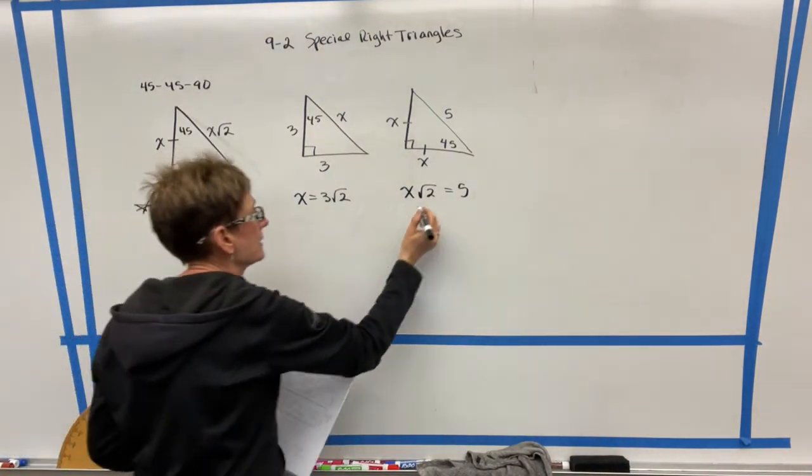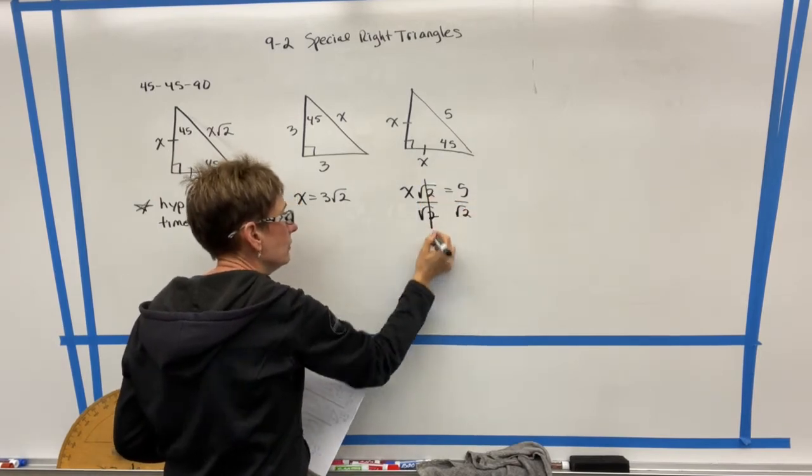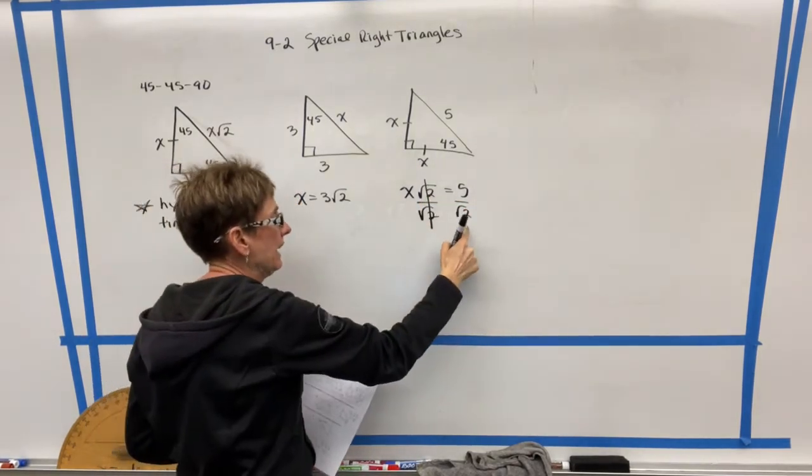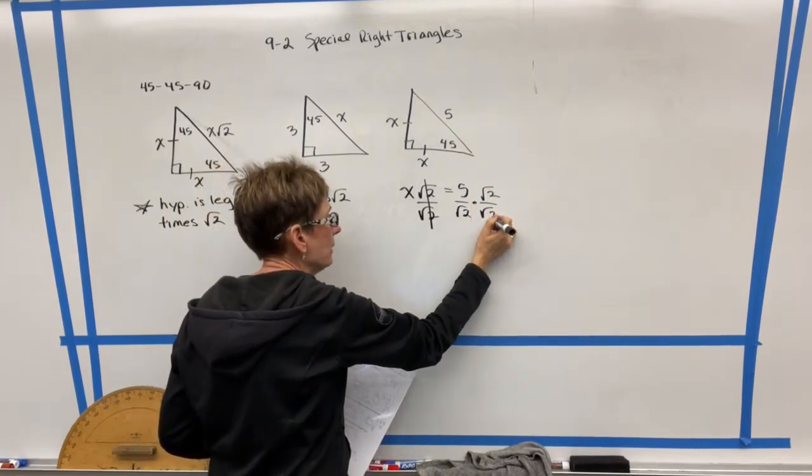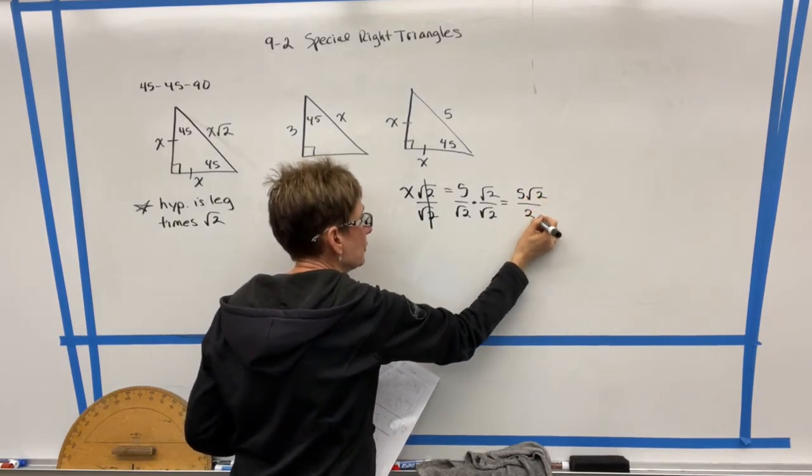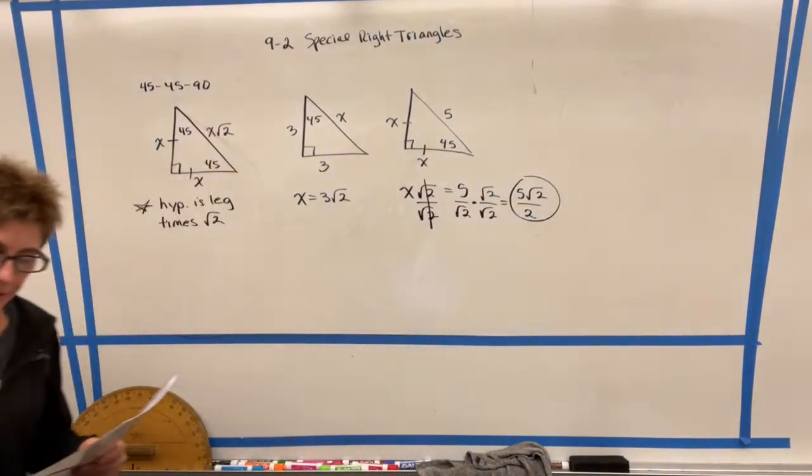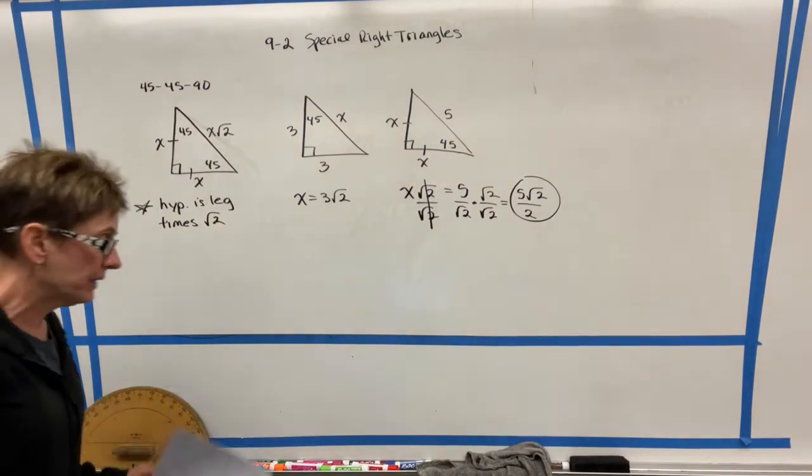And then to solve for x, I would divide both sides by radical two. The only problem is I can't leave a radical on the denominator, so I have to do something called rationalizing the denominator. And this would be my final answer. The leg would be five radical two over two. So that's the 45-45-90.